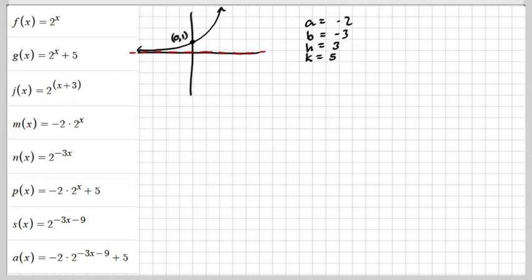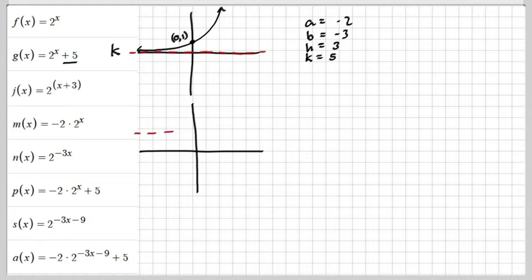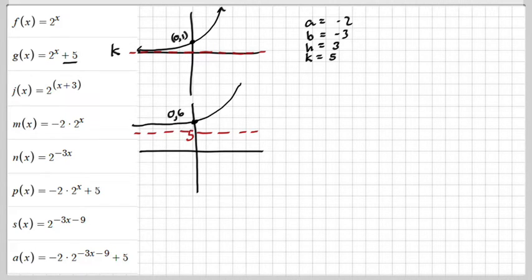Let's start with K. The K moves the function up or down vertically. So what you would do is take your asymptote and move it up to 5 — remember it was at 0 — and then take that point and move it up 5 spaces, so that would be (0, 6). This right here would be our graph of G.